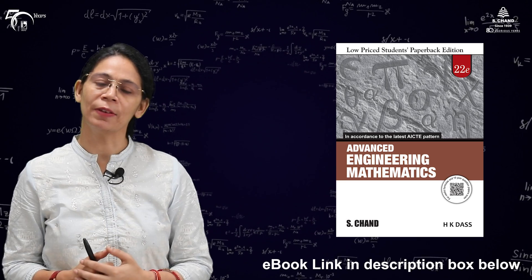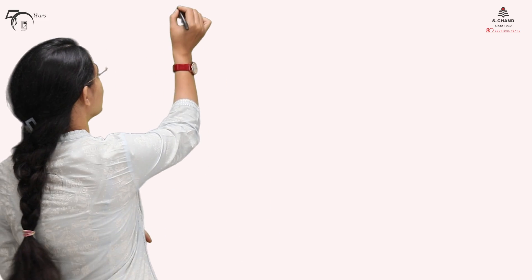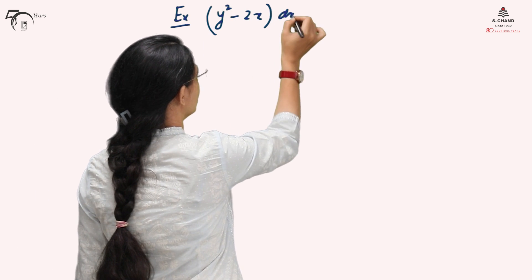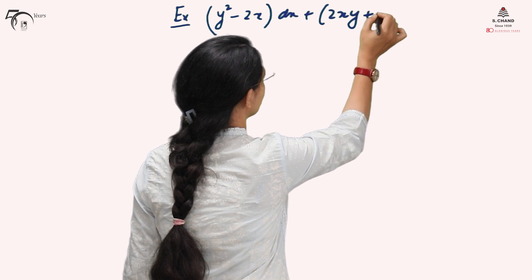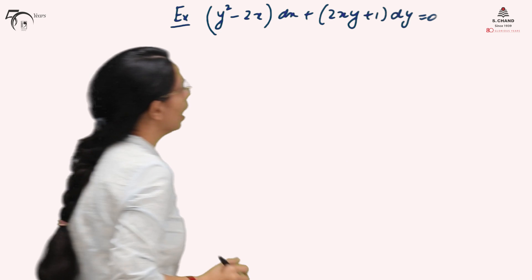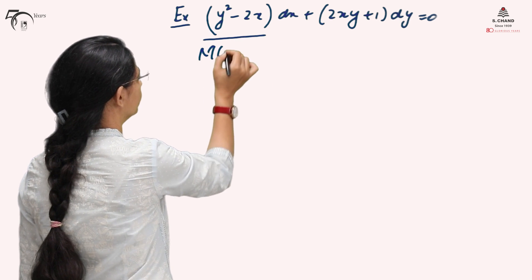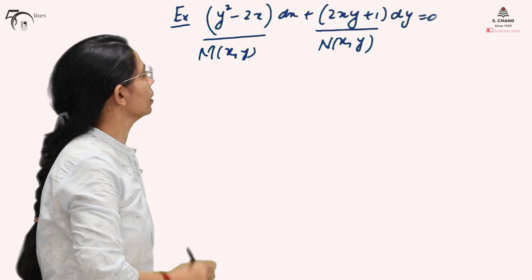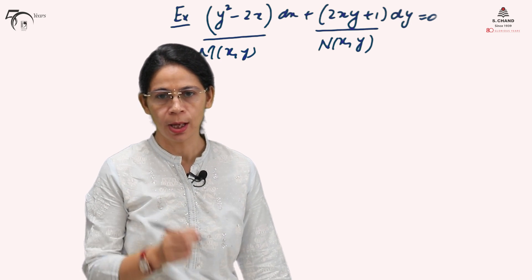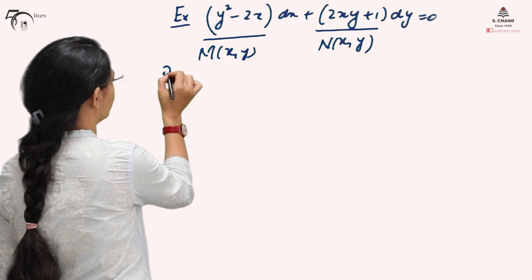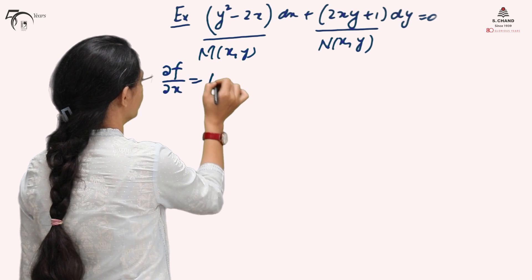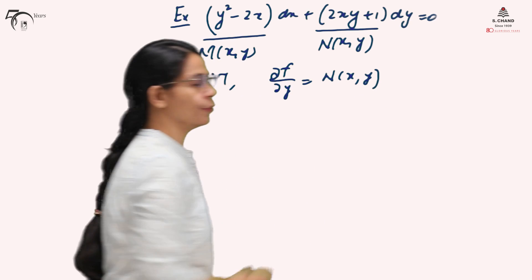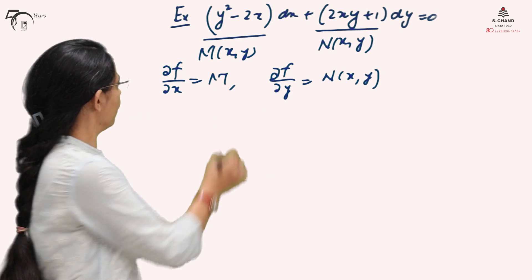The given example was: (y² − 2x)dx + (2xy + 1)dy = 0, where M(x,y) = y² − 2x and N(x,y) = 2xy + 1. We verified that this satisfies the condition for an exact differential equation. We know the solution can be found, and that ∂f/∂y = N(x,y). In the first part, we calculated f using that expression.